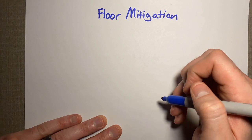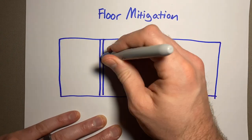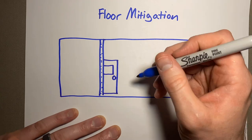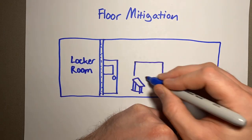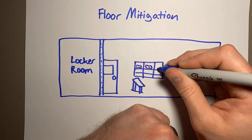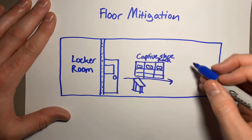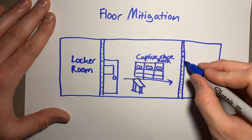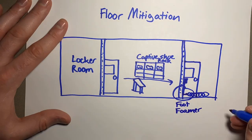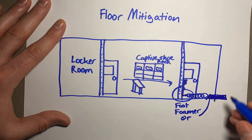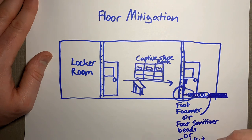Lastly, what is floor mitigation? Maybe you have all the proper zones — your locker room goes into a transition area with a bench and captive shoes, and you're not taking outside shoes into the plant. When you are about to go into the plant, sanitizing those shoes is crucial. You could do that by using a foot foamer, foot sanitizer beads, or a foot bath.